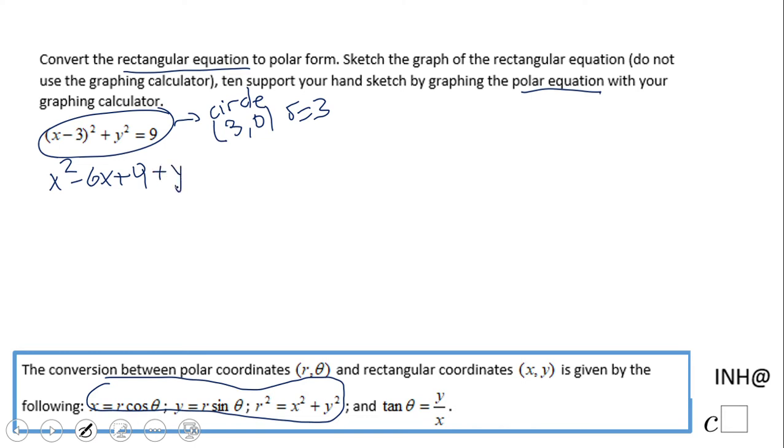Now you should notice what we have: x² plus y². These two guys right here. So that will be r² minus instead of x, I'm gonna use r cosine of theta plus 9 equals 9.